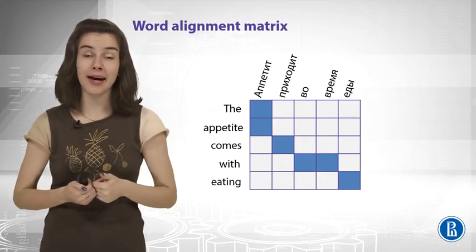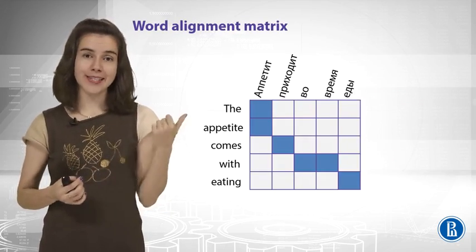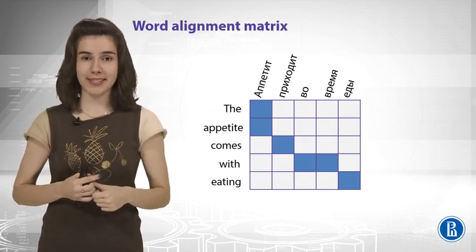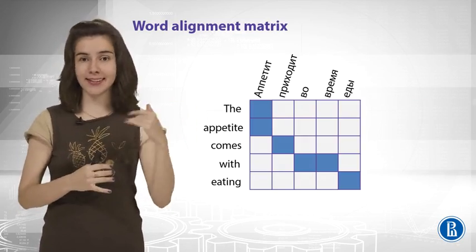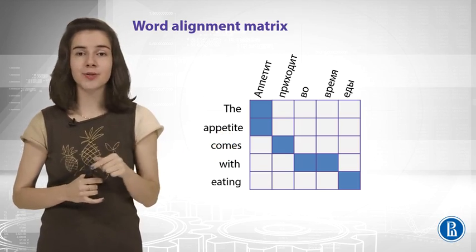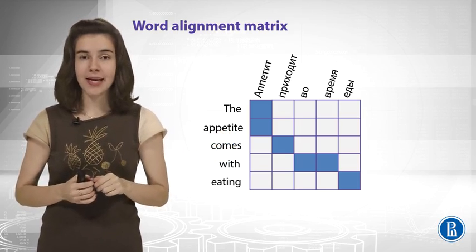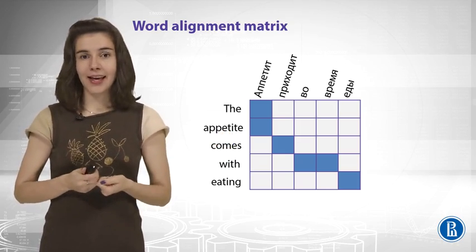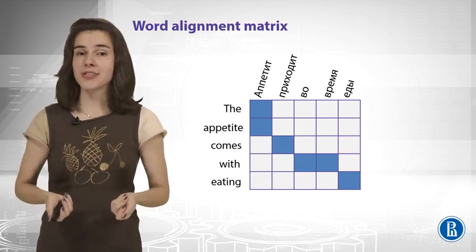Now what about word alignments? How do we represent them? So the matrix of word alignments is one nice way to do this. You have one sentence and another sentence and you have zeros or ones in the matrix. So you know which words correspond to each other.